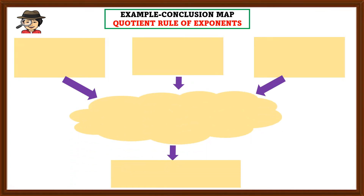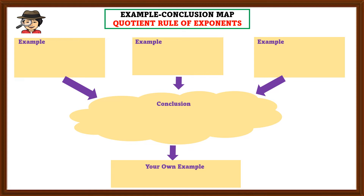From the given boxes above, this will be where we place the examples. From the given examples, your task is to observe the pattern in order to create a conclusion based on your observation. From that conclusion, you can now create your own example. This is the application of the example-conclusion map.